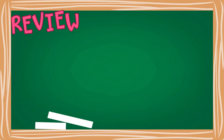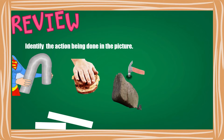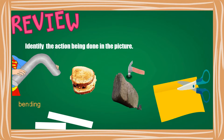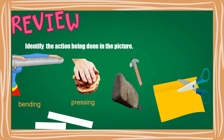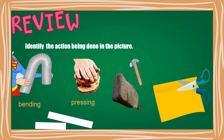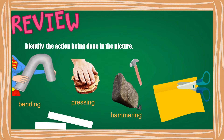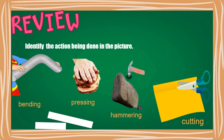Let us have a short review of our past lesson. Identify the action being done in the picture. This is Bendy. This is Cresci. This is Hummery. This is Cutty.